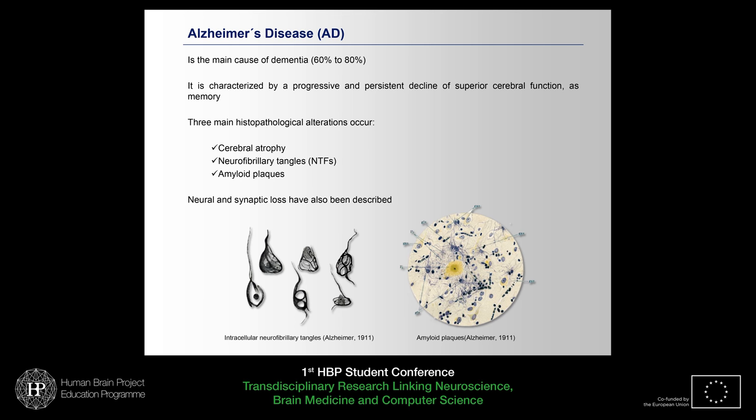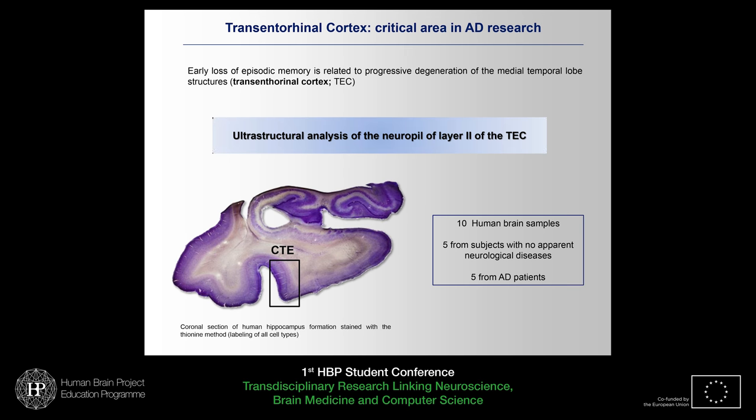During the course of the disease, many histopathological alterations occur: cerebral atrophy, neurofibrillary tangles — which are made of the intracellular accumulation of hyperphosphorylated tau protein — and amyloid plaques, which are made of the extracellular accumulation of amyloid peptide. In addition to these histopathological alterations, other changes have also been described, such as neuronal and synaptic loss.